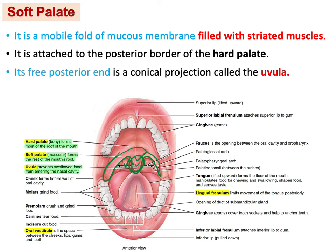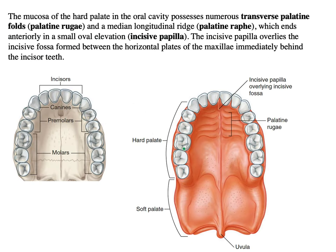Looking in a mirror, the uvula should always be in the midline. You can feel the hard palate with the tip of your tongue. The mucosa over the hard palate forms ridges — not completely smooth — called transverse palatine folds or palatine rugae.